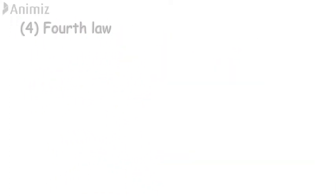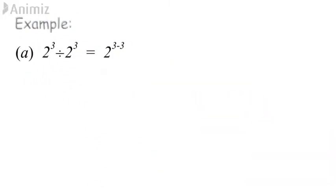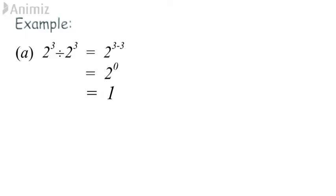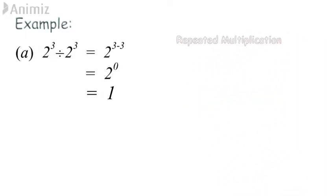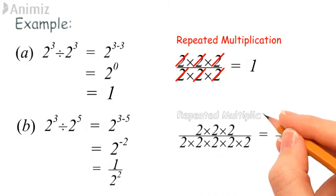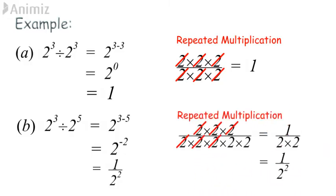Fourth law: a^0 = 1, and a^(−n) = 1/a^n, where a ≠ 0. Example A: 2^0 = 1, and using repeated multiplication we can prove this. Example B: 2^(−2) = 1/2². By using repeated multiplication we can prove this.